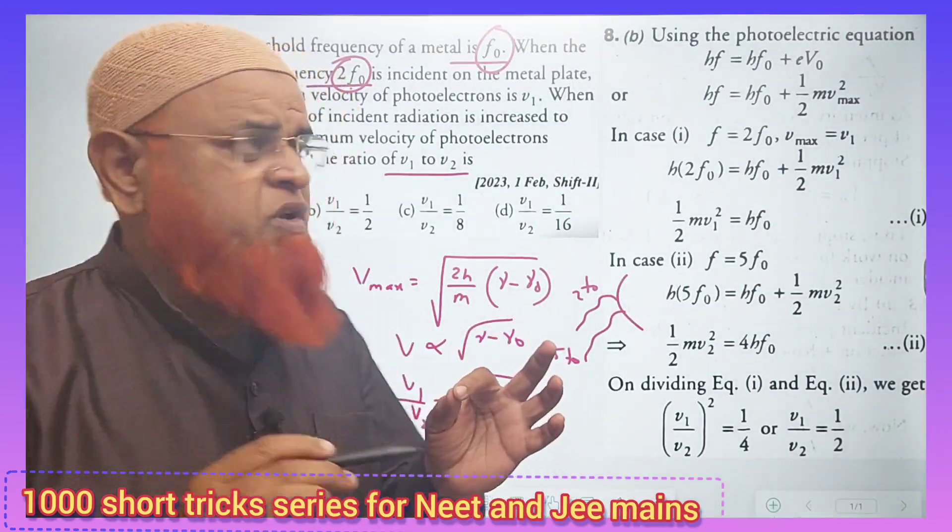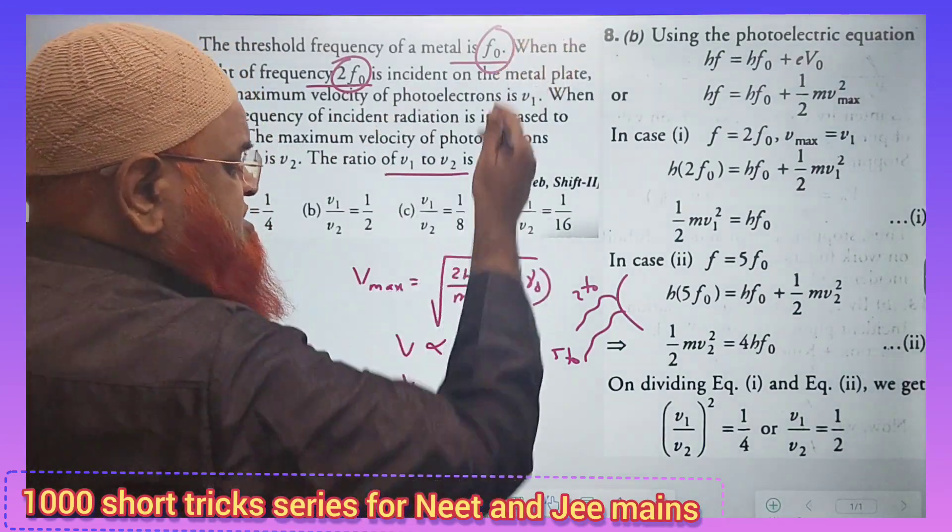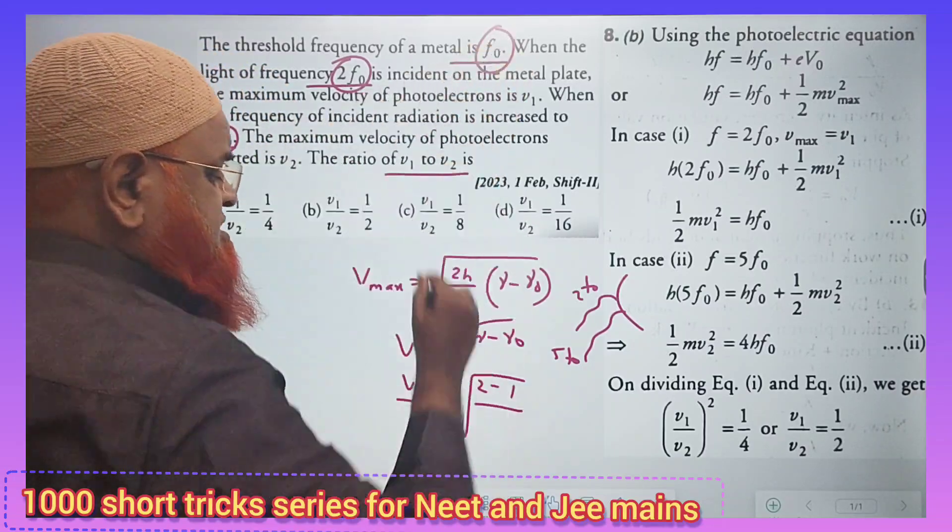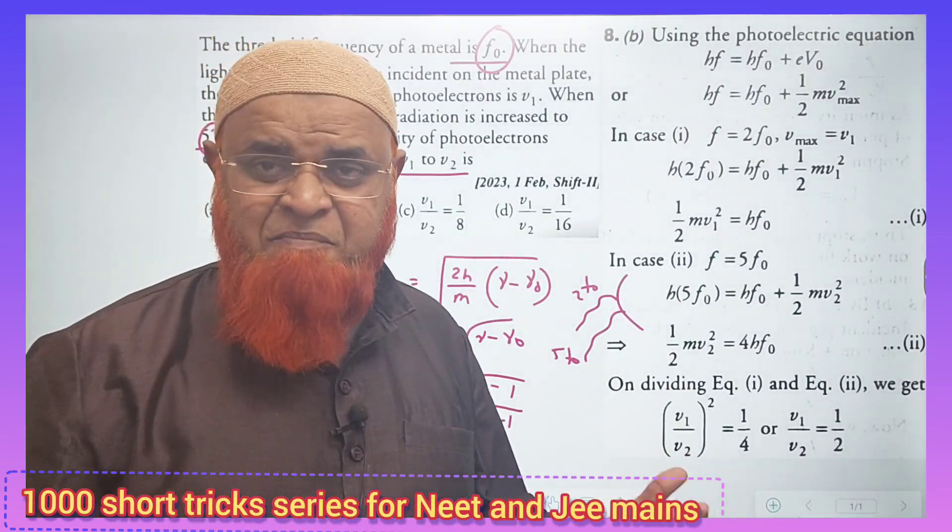A simple thing you have to do is just you can consider 2F0 minus F0, that is 2 minus 1, and 5F0 minus F0, that is 5 minus 1. Your answer is ready. That's it. In a single step.